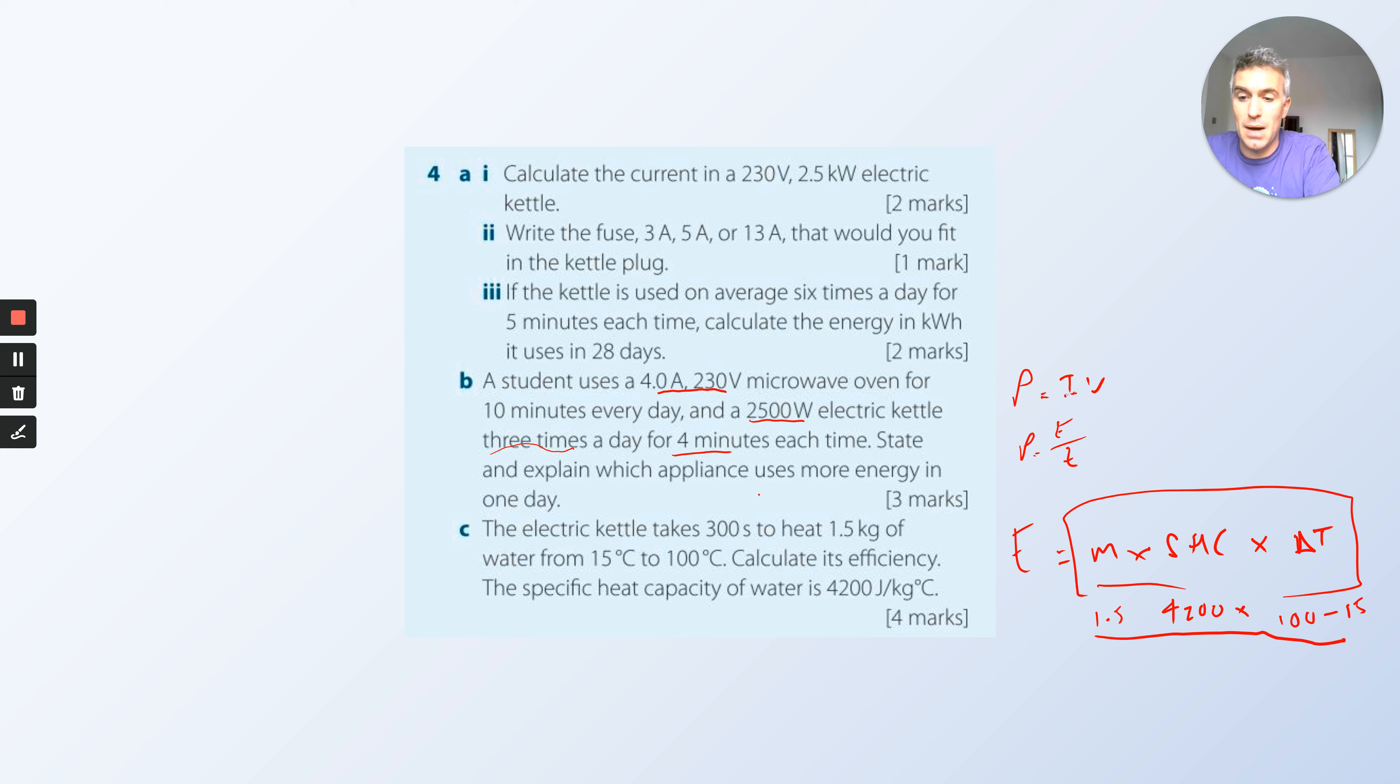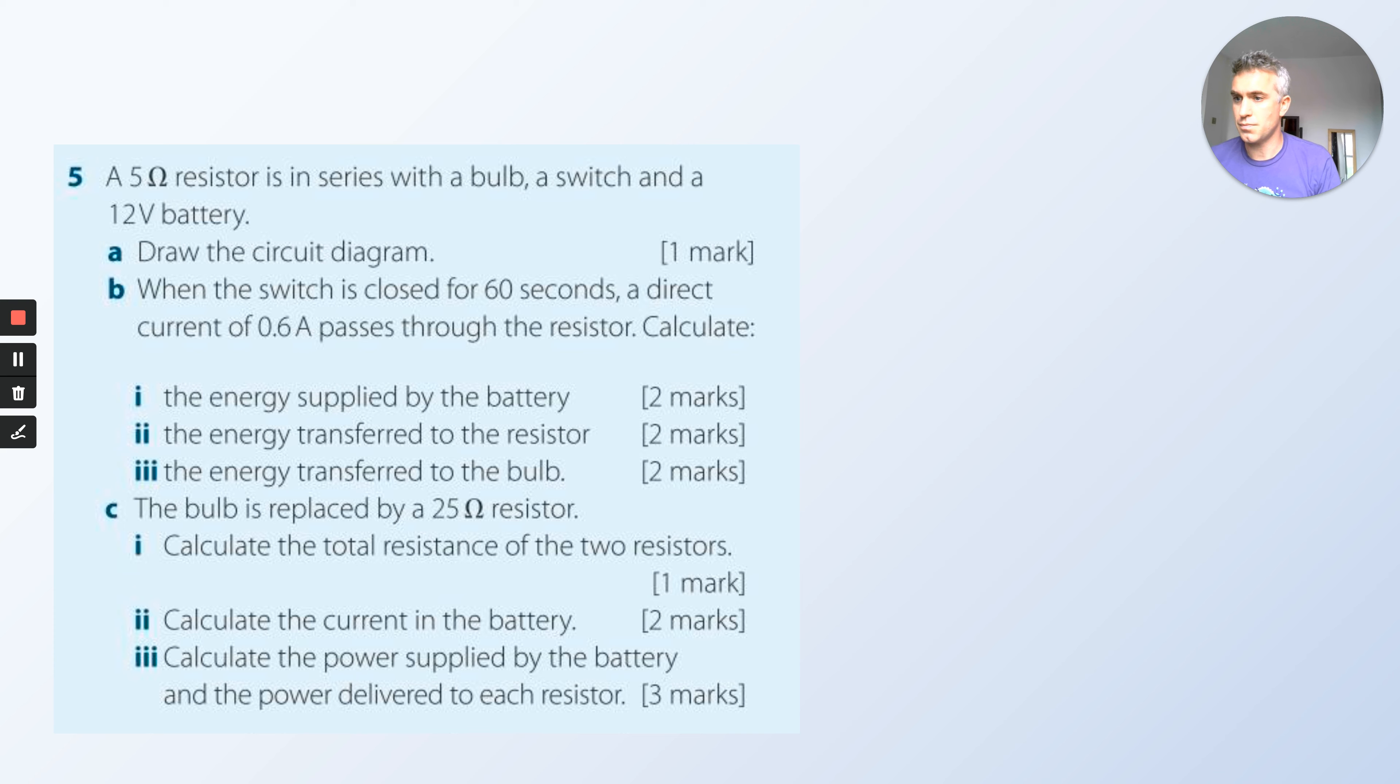Specific heat capacity is 4200, mass 1.5, that's how much energy you need. Now we've got this kettle takes 300 seconds. It's that powerful. Work out how much energy it actually gives, then you could do the efficiency. I actually did that in the little video, so you can have a go.